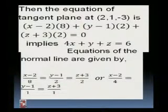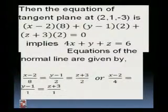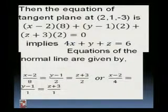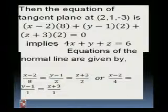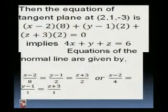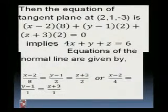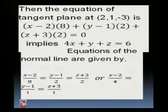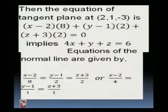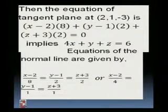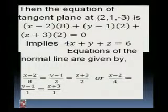This simplifies to 4x + y + z = 6. The equations of the normal line are: (x − 2)/8 = (y − 1)/2 = (z + 3)/2, or equivalently, (x − 2)/4 = (y − 1)/1 = (z + 3)/1.